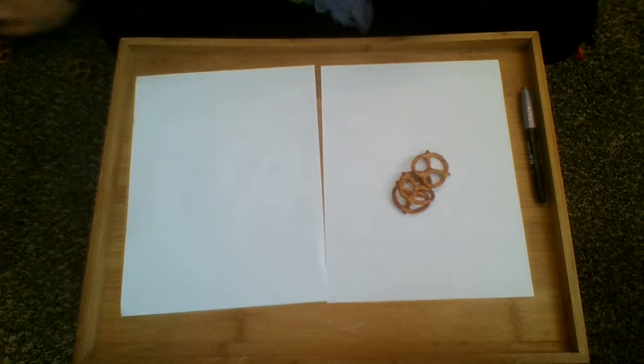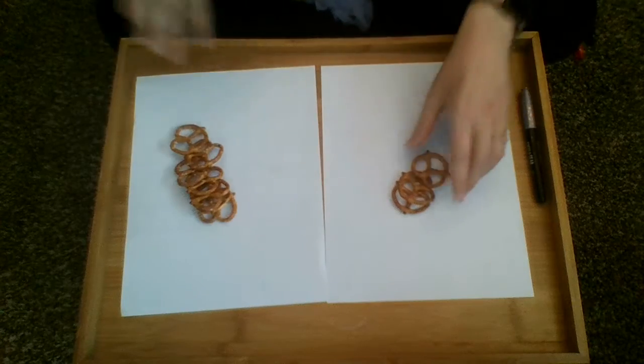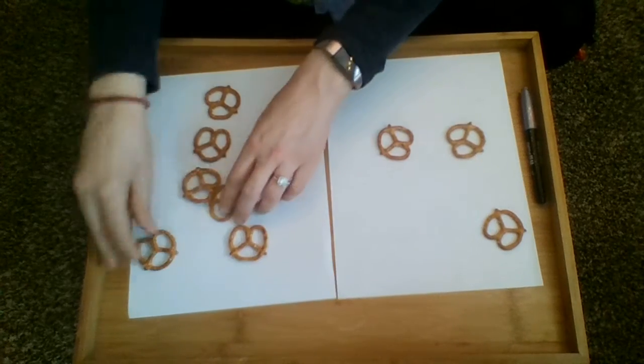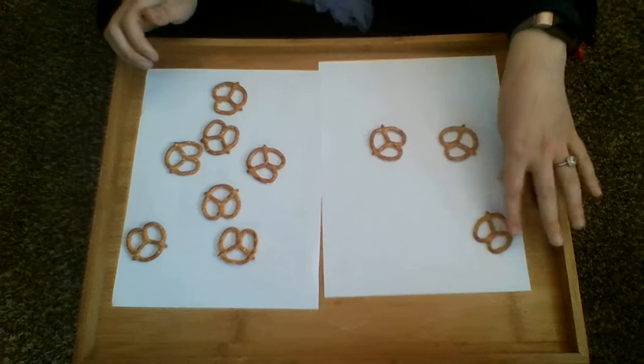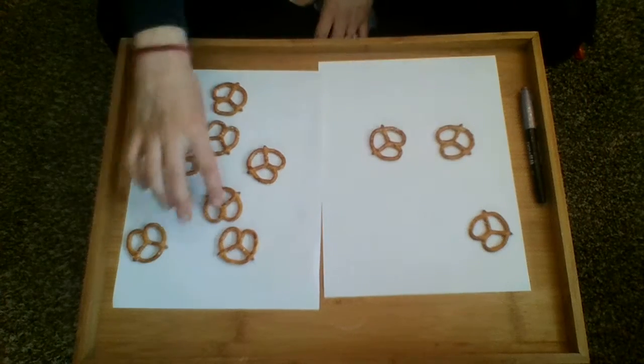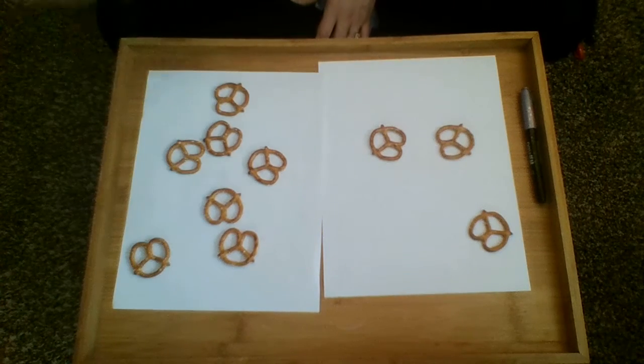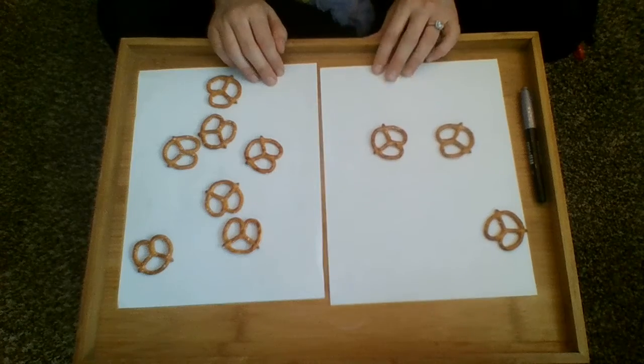And I can just take a handful and scatter them on. So I know I have ten pretzels all together and I can count the different combinations. One, two, three. One, two, three, four, five, six, and seven. Three and seven make ten.